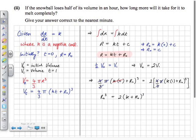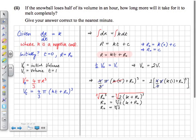Taking the cube root of both sides: r₀ equals the cube root of 2 times (k + r₀). Expanding: r₀ equals ∛2 · k plus ∛2 · r₀. Collecting r₀ terms: r₀(1 − ∛2) equals ∛2 · k. Dividing both sides by (1 − ∛2) gives r₀ in terms of the constant k. We highlight this as equation 2.